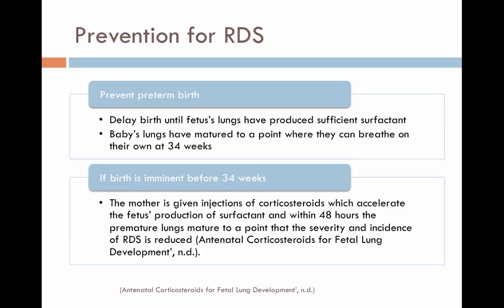The risk of respiratory distress syndrome is greatly reduced if delivery can be delayed until the fetus's lungs have produced sufficient surfactant. The baby's lungs have matured to a point where the infant can breathe on their own at 34 weeks gestation. When premature birth cannot be avoided, the mother is given an injection of a corticosteroid, which accelerates the fetus's production of surfactant.